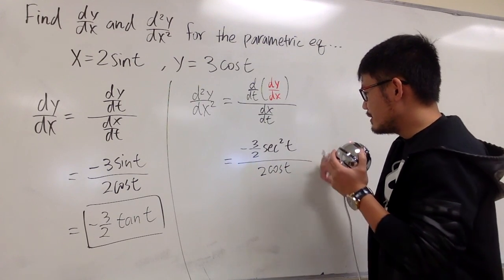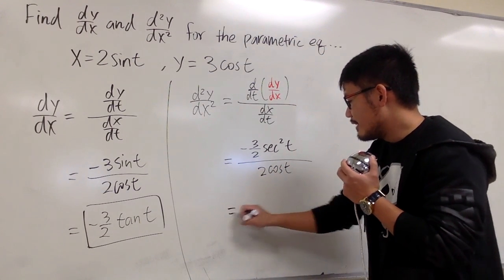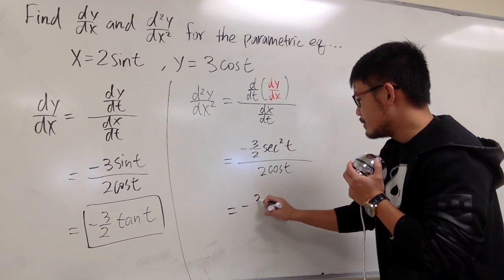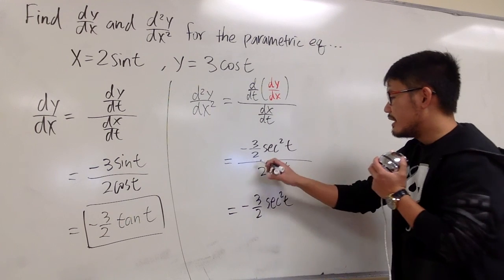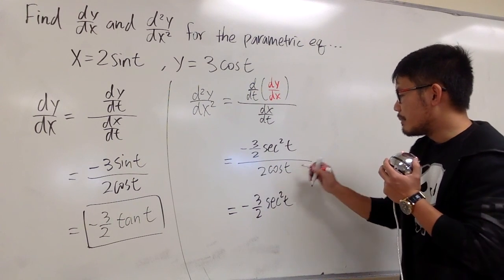So now, you can just put these things down nicely. Let me just write it down as negative 3/2 secant squared t, and then this is the denominator.